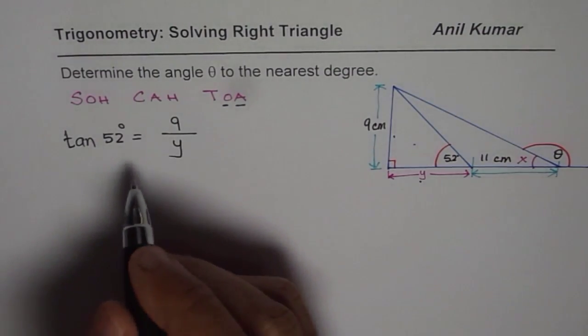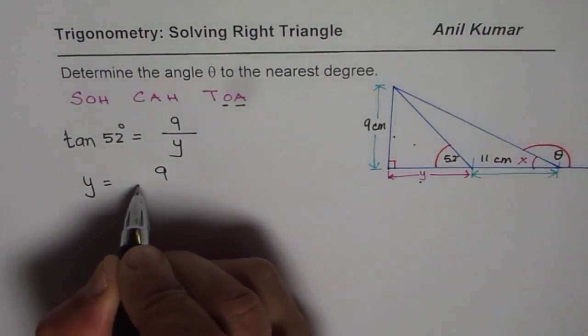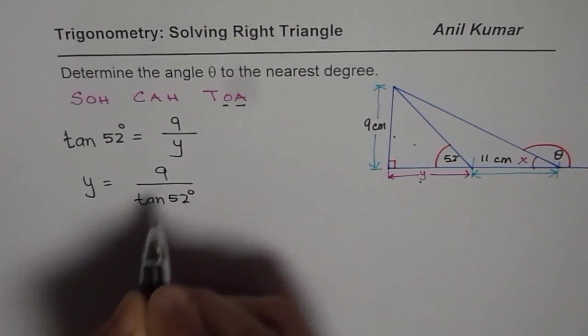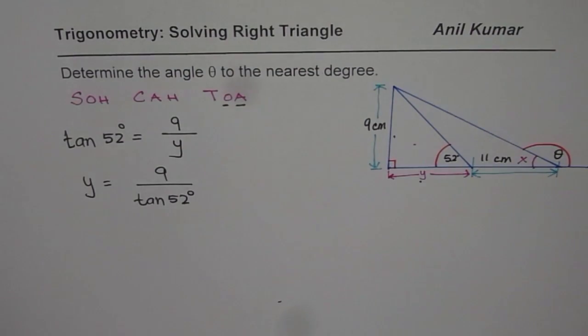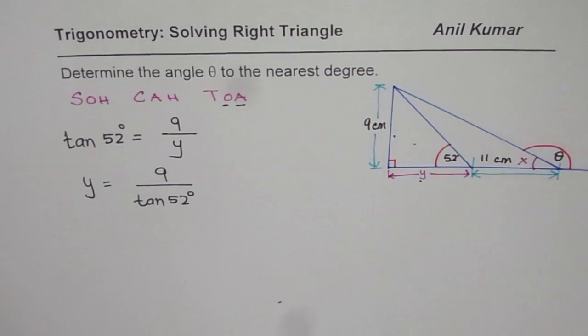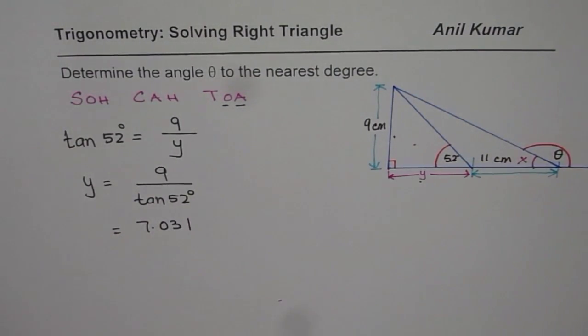Now we can cross multiply and get the value of y. So y is equals to 9 divided by tan of 52 degrees. So at this stage, we can always use the calculator to find the answer. So we get 9 divided by tan of 52 equals to 7.031. So we get y as 7.031.